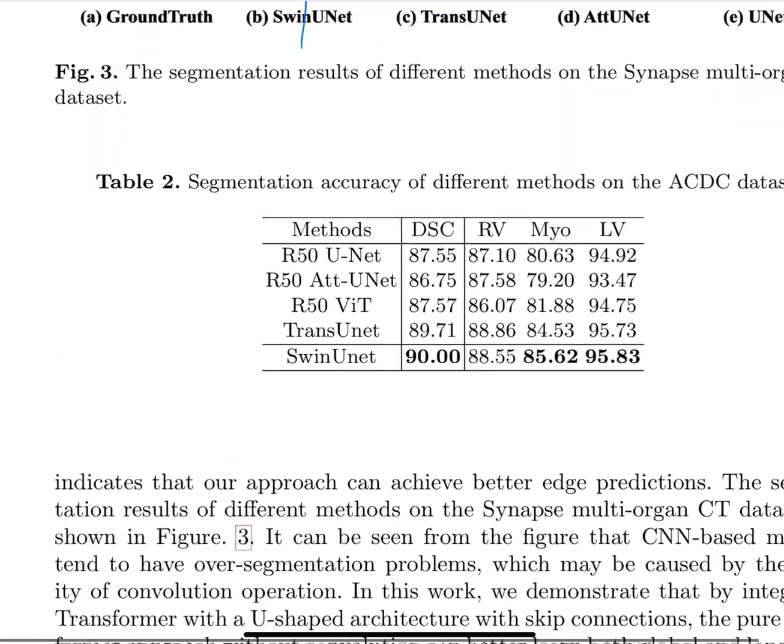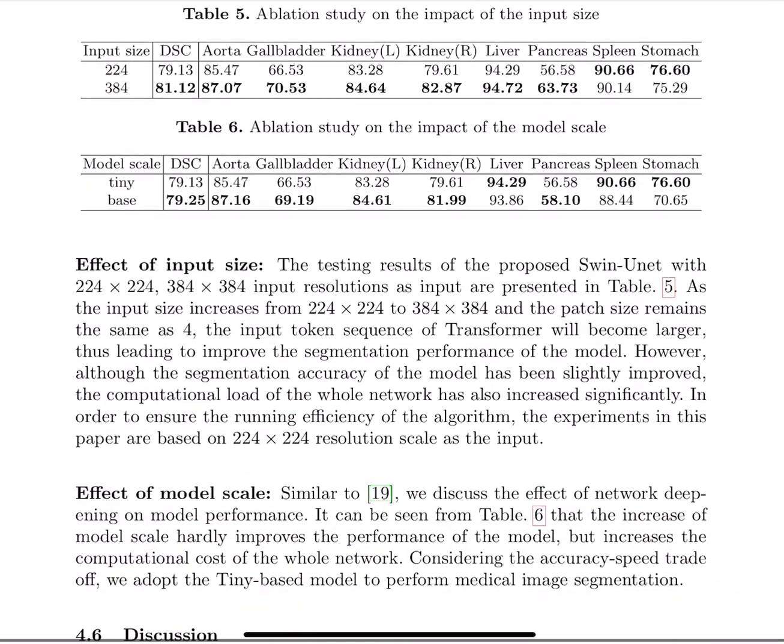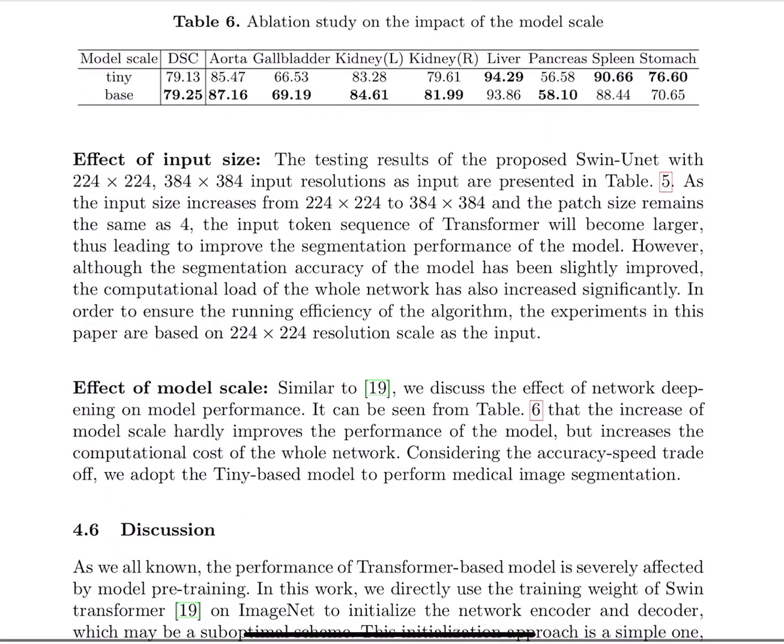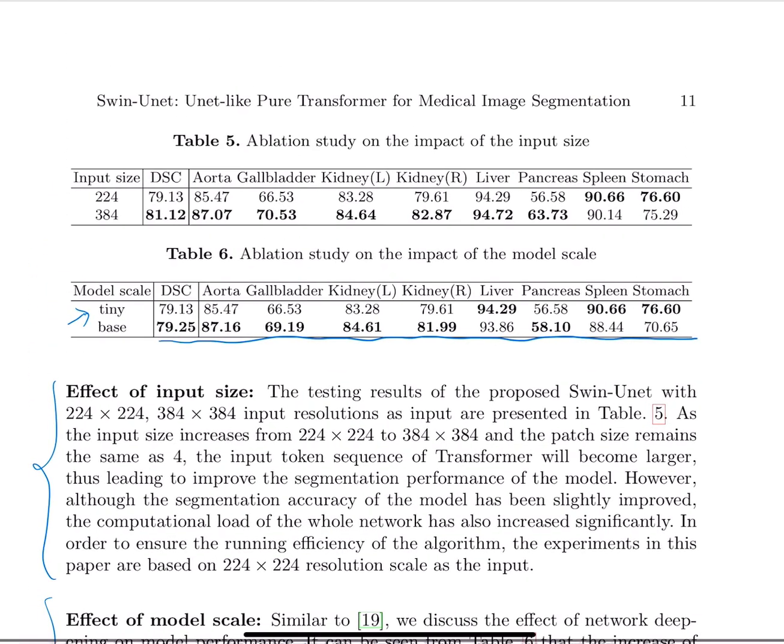So another thing that I would like to point out that I would like to understand better is here, for the discussion they talked about two things: the effect of the input size and the model scale. So the model scale, basically you have a number of parameters and they say that it hardly increases the performance if you use the base, but I would say it does increase. They say that they end up using Tiny, the Tiny version, for all the results.